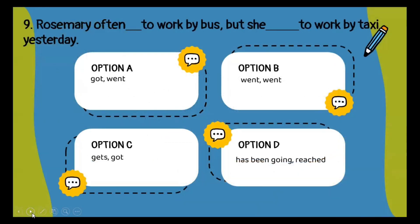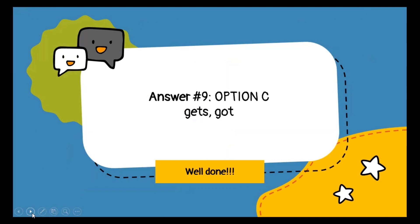Question number nine is again a fill-in-the-blank. 'Rosemary often dashed to work by bus, but she dashed to work by taxi yesterday.' Rosemary often goes by bus, meaning she does so frequently, so simple present tense is used. Using the elimination method, gets suits here. The correct answer is: Rosemary often gets to work by bus, but she got to work by taxi yesterday. So gets and got — option number C — is the correct option.